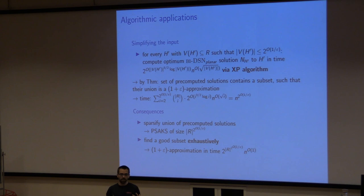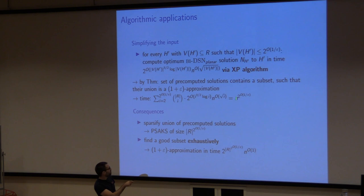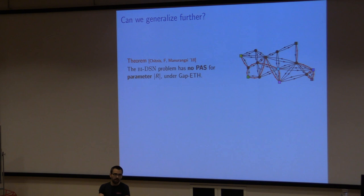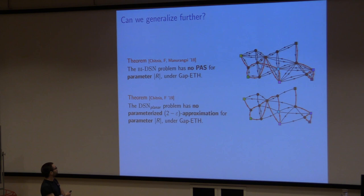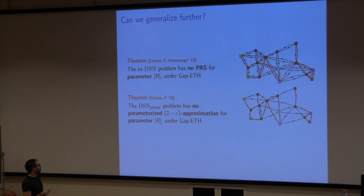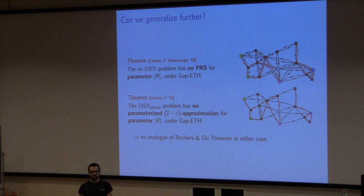Alternatively, exhaustively going through all pre-computed solutions and finding the (1+epsilon)-approximate solution guaranteed by the theorem gives a parameterized approximation scheme. Can we generalize further? If we drop the condition that the optimum should be planar, we show there is no parameterized approximation scheme. Similarly, if we drop the condition that the input is bidirected but still require a planar solution, there is again no approximation scheme — in fact, no (2-epsilon)-approximation for this parameter. So in either generalization, what I showed is really the limit of what we can do.